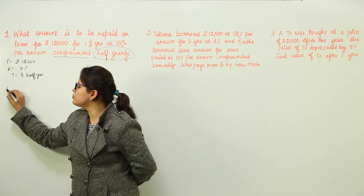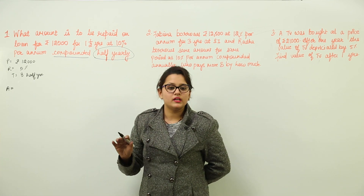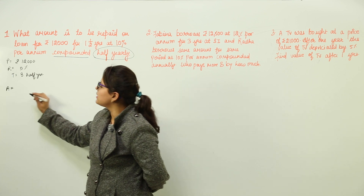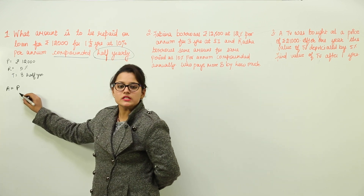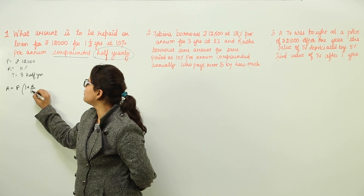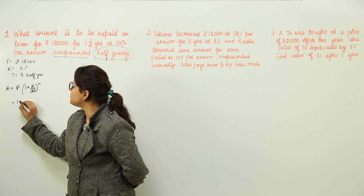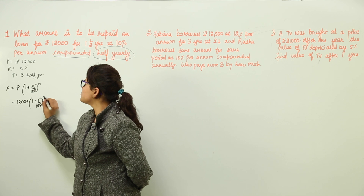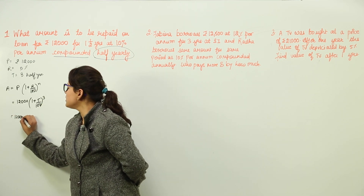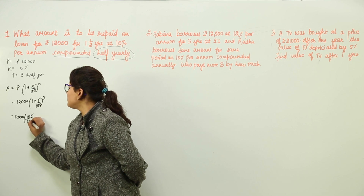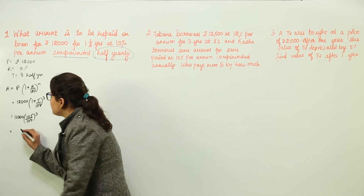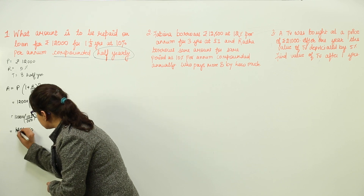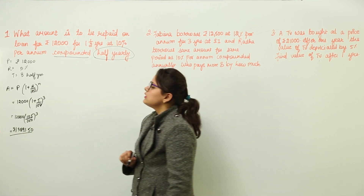Let me introduce another formula for calculating amount directly. The formula is: Amount = Principal × (1 + Rate/100)^n. Here, the principal is 12,000, so we get 12,000 × (1 + 5/100)^3, which equals 12,000 × (105/100)^3. Solving this gives Rs. 13,891.50 as the amount for 3 half years.